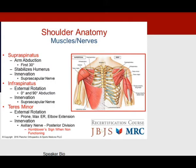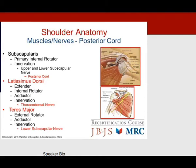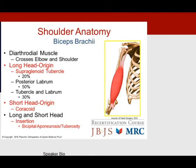The supraspinatus initiates arm abduction in the first 30 degrees and is innervated by the suprascapular nerve. The infraspinatus handles external rotation at 0 and 90 degrees, also innervated by the suprascapular nerve. The teres minor is another external rotator innervated by the posterior division of the axillary nerve, yielding a hornblower sign when not functioning. The subscapularis is the primary internal rotator, innervated by the upper and lower subscapular nerves. The latissimus dorsi is innervated by the thoracodorsal nerve, and the teres major by the lower subscapular nerve.